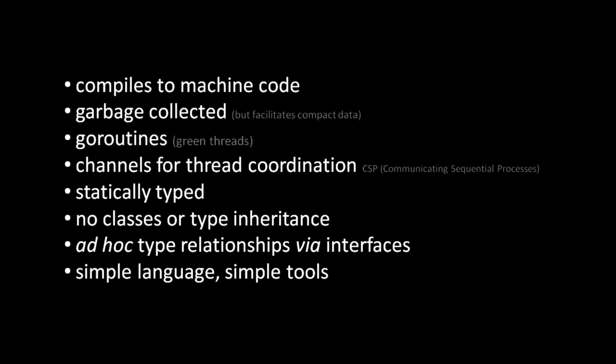Most notably, Go is garbage collected and memory safe. Consequently, unlike C and C++, Go is generally inappropriate for low level code and very high performance code, such as in operating systems and graphically intensive games. Where Go excels is in concurrency, thanks to two features: Go routines and channels. Go routines allow us to create many separate threads of execution without the usual overhead, and channels give us a simple mechanism to communicate between our threads and synchronize them. Along with native compilation, these features make Go particularly well suited for server code, and that is where Go has most commonly been used.